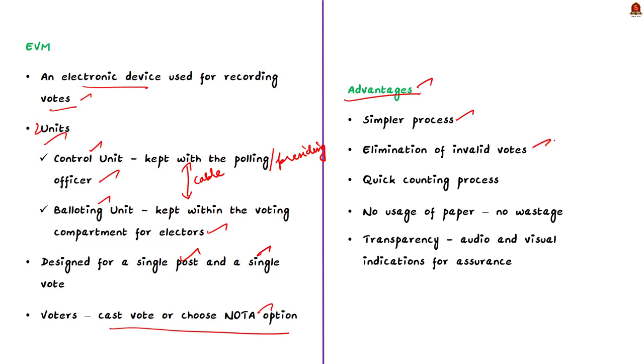Secondly, the scope of invalid vote is eliminated. Thirdly, the counting process is very quick and the result can be declared in hours as opposed to days. Fourthly, there is no need for printing millions of ballot papers. This leads to saving of money on account of paper, printing, transportation, storage and distribution. Finally, there are both audio and visual indications for the voter to be assured that his vote is recorded correctly. As soon as the voter presses the blue button, the lamp against the symbol of his chosen candidate glows red and a long beep is heard.